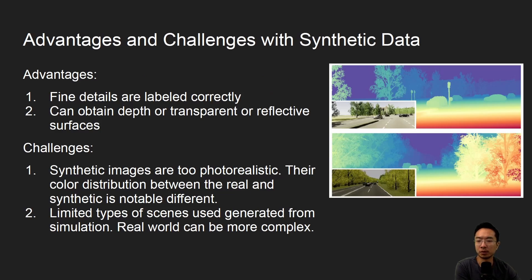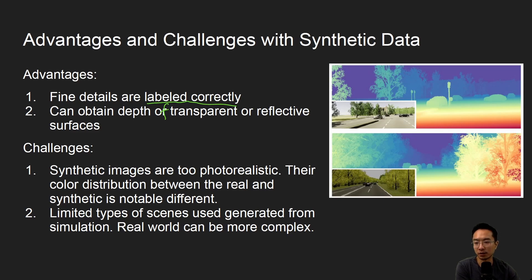Advantages of synthetic data include that fine details are labeled correctly — you can see all the details finely shown in the depth maps — and you can also obtain depth for transparent and reflective surfaces, since the synthetic generator treats them as solid objects. However, there are challenges: the synthetic image can be too photorealistic with a different color distribution from real images, and the limited types of scenes used may not capture the complexity found in real life.